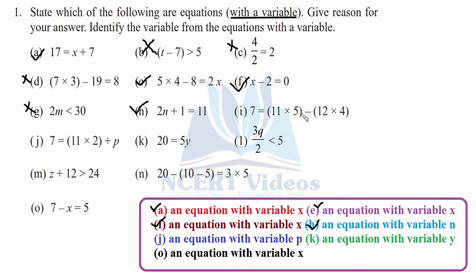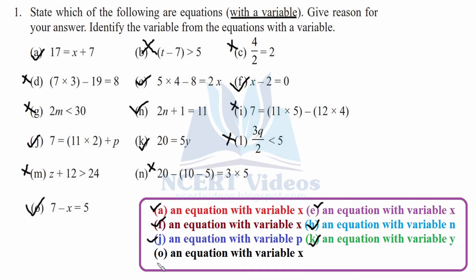Part i is very similar to parts c and d — it doesn't have any variable, although it is a numerical equation. Part j has an equal sign, left hand side, right hand side, and there is a variable y — it is correct, an equation with variable y. You just have to check three things: equal sign, left and right hand sides, and a variable. Parts k and l are crossed as they have no equal sign or no variable. The final part has an equal sign and variable x, so it is an equation with variable x.